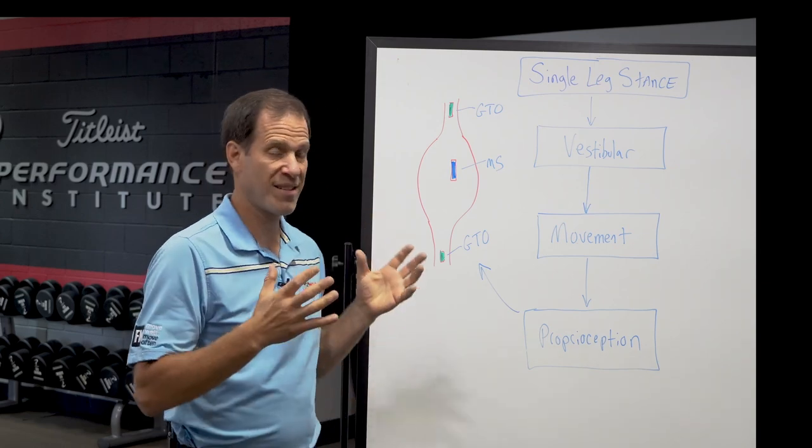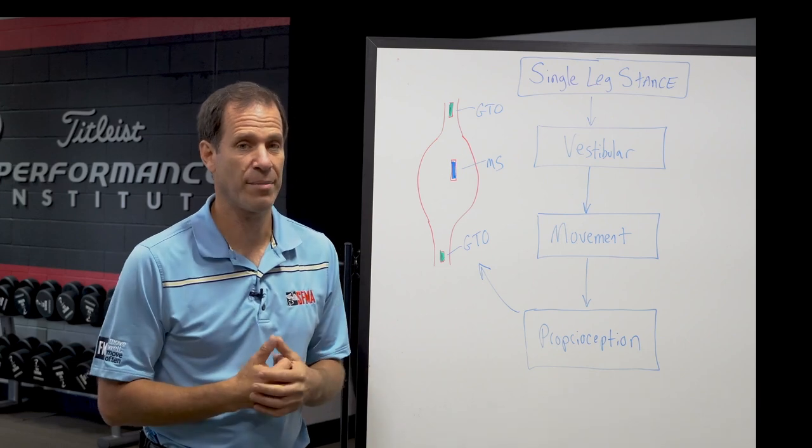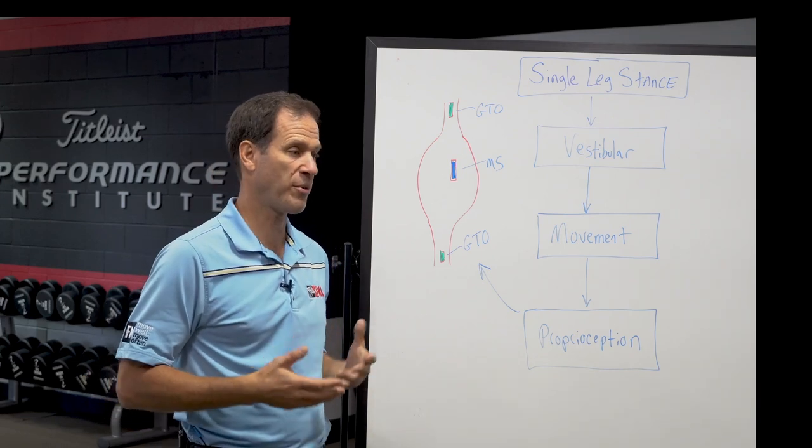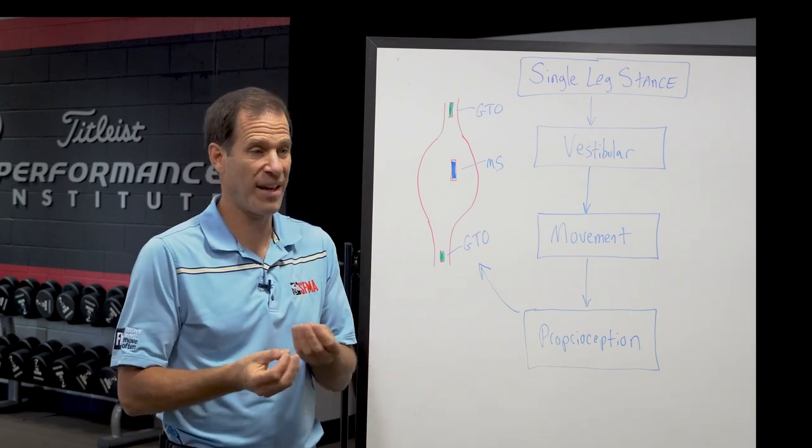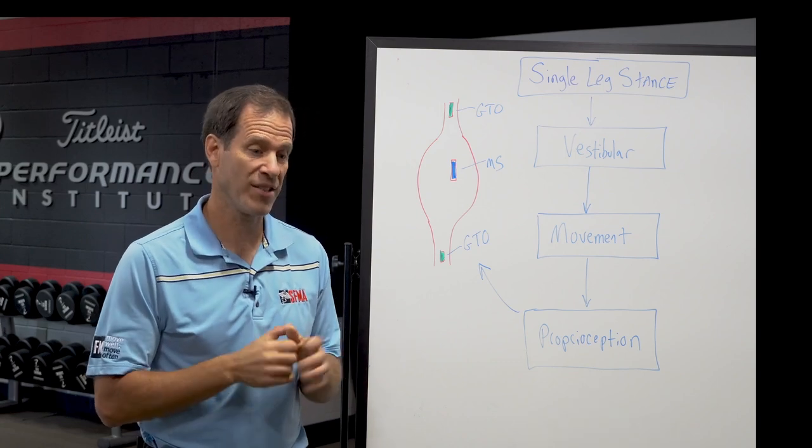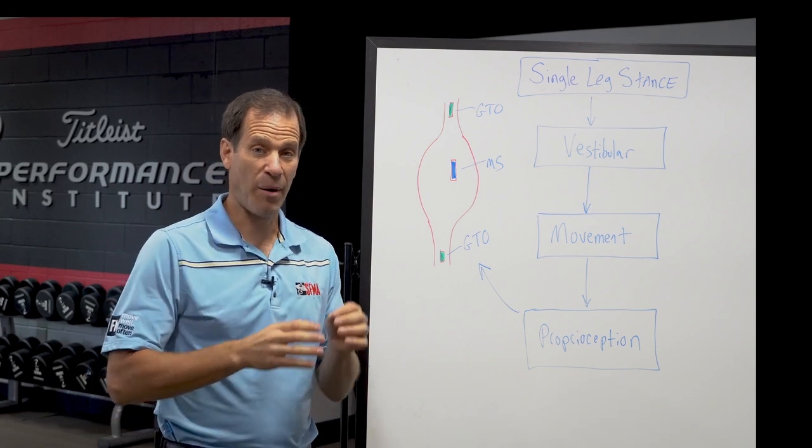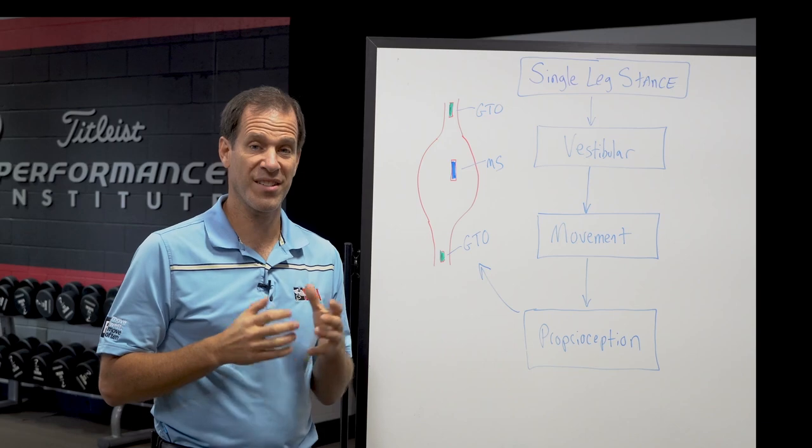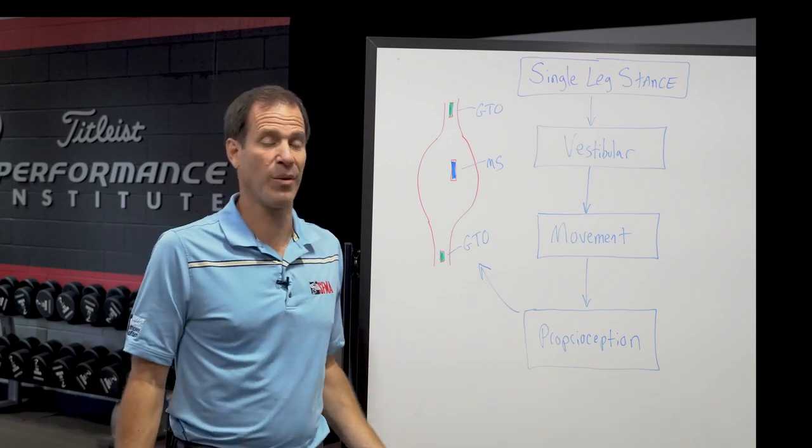Now the SFMA is based on seven primary movements. We call them the top tier. We actually watch our clients go through these seven movements and it helps us understand where maybe the dysfunction is originating. Now I want to talk about one of those movements today called the single leg stance or your ability to stand on one leg.